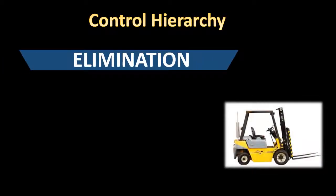When determining the best control to use for a given hazard, you can refer to the hierarchy of control. At the top of the hierarchy is elimination. If we can get rid of the hazard entirely, that is the most effective way to control it. An example of hazard elimination would be to use material handling equipment, rather than have workers handle the equipment manually.